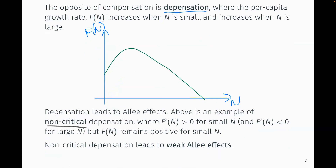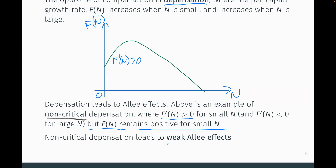Here we have a positive growth rate — F prime of N is positive for small N, but it always remains positive. This is non-critical depensation, and this is something called a weak Allee effect. As the population gets smaller, it's still growing — it's just growing at a slower rate.